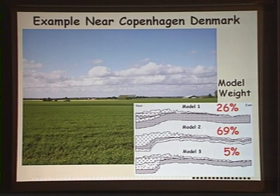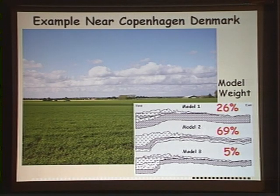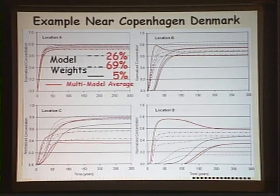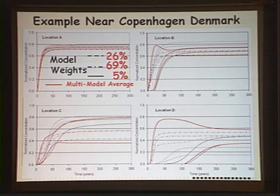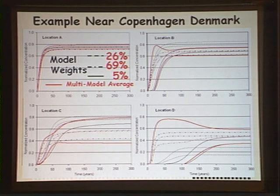Looking at the example near Copenhagen, the three models had weights of 26, 69, and 5 percent. I was impressed because often one model comes up with 99.99 percent weight and the others are insignificant — so clearly they have a good idea of the possible ways their system might be connected. With multi-model averaging, they can show the public a prediction for every year with a confidence interval using the red lines. Sometimes the confidence intervals will be outside those of each individual model, and sometimes they'll eliminate intervals calculated by one model.